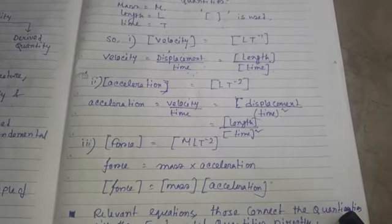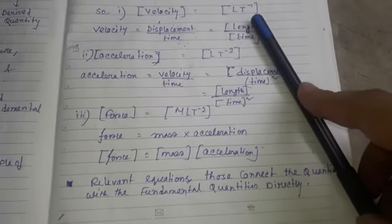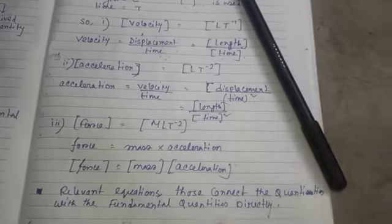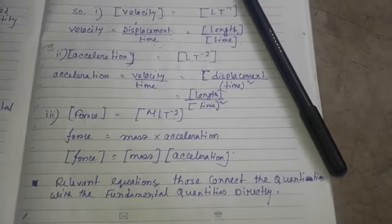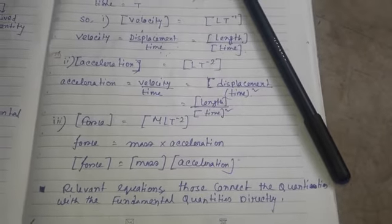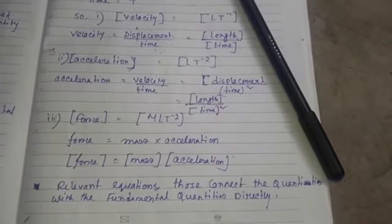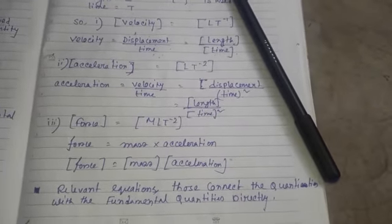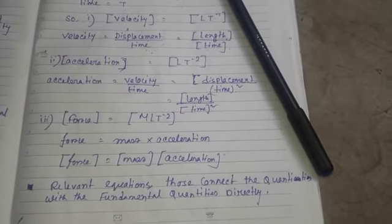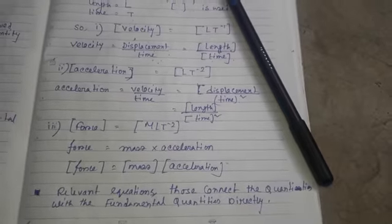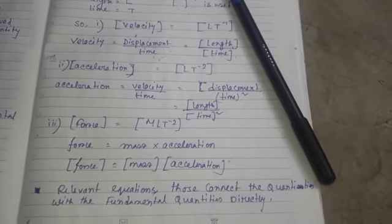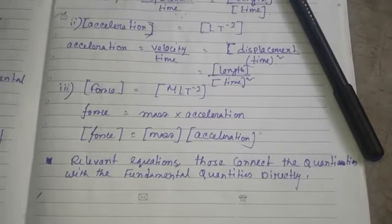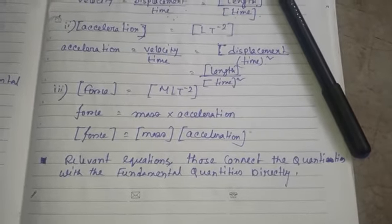From these three examples, one important point should be noted: to find the dimension of any derived quantity, you must know the direct relationship that connects the derived quantity with the fundamental quantities. You must know the basic equation — that knowledge is really needed to find the dimension of any derived quantity.